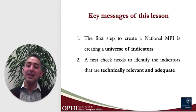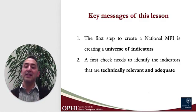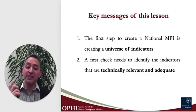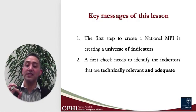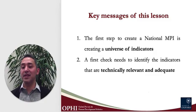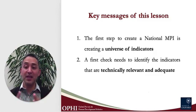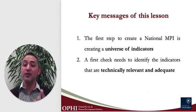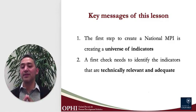A second key element is that once the universe of indicators is set, each one of its elements has to be checked for technical relevance and adequacy. Some indicators, for example, may have too many missing values, in which case they are not useful to truly reflect people's lives. This is a technical deficiency.